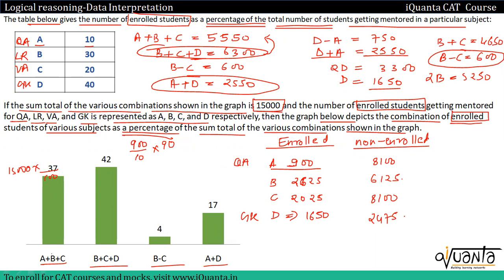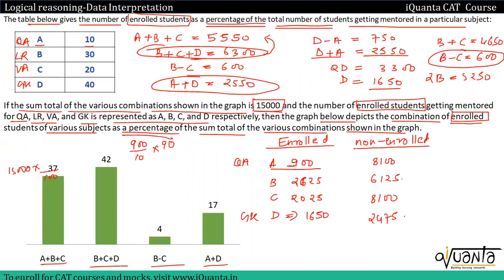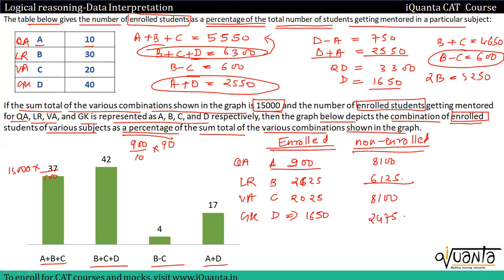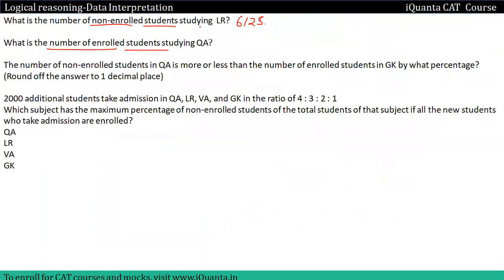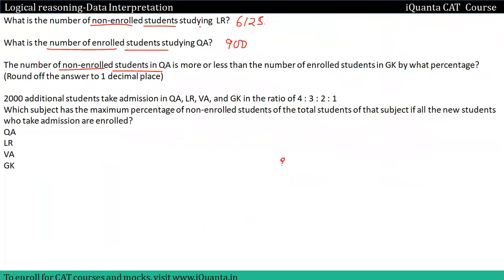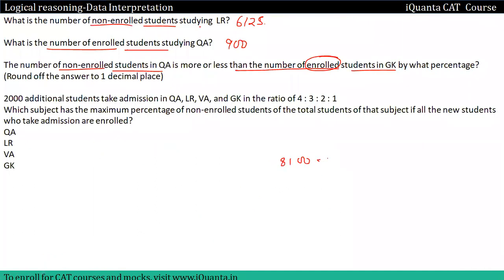Now we have the questions. The first question asks: what is the number of non-enrolled students studying QA? Non-enrolled students studying QA — enrolled students studying QA is 900. The number of non-enrolled students in QA is 8100. Is this more or less than the number of enrolled students in GK, which is 1650?